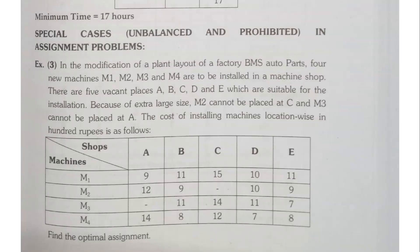Because of extra large size, M2 cannot be placed at C and M3 cannot be placed at A. So we have a restriction that M2 cannot place with C and M3 we cannot install or place it at shop A. The cost of installing machine location wise is in 100 rupees as follows.